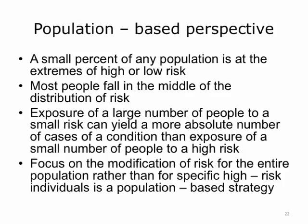Jeffrey Rose, 1981–1992, an epidemiologist famous for defining the population prevention strategy, observed that exposure of a large number of people to a small risk can yield a greater absolute number of cases of a condition — for example, diabetes or heart disease — than exposure of a small number of people to a high risk. This understanding argues for public health strategies that focus on the modification of risk for the entire population, rather than for specific high-risk individuals.